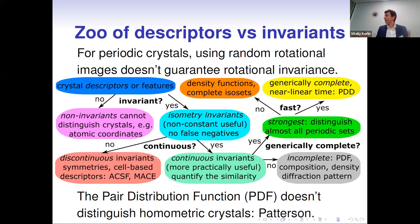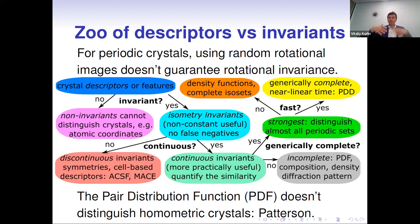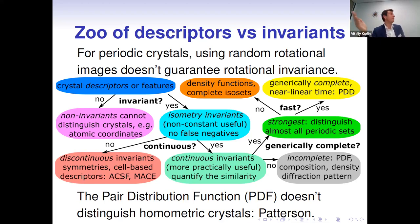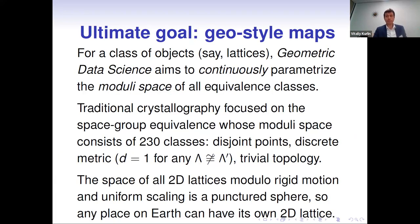Here is a summary of descriptors used in the past. Atomic coordinates are still used — some papers apply one thousand rotations to a motif, making the problem a thousand times harder. Better are invariants like the pair distribution function, which is continuous — but not complete, since homometric crystals known since 1959 have the same diffraction pattern but are not isometric. We need stronger invariants.